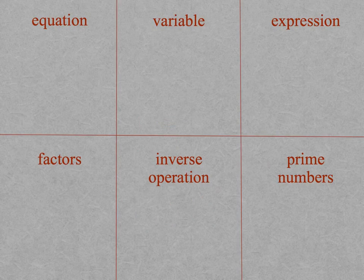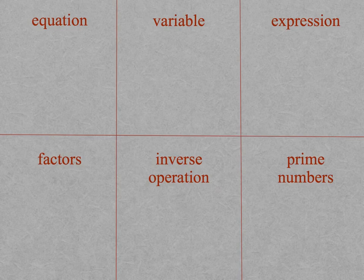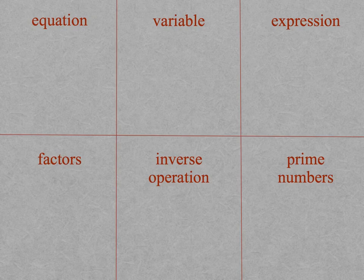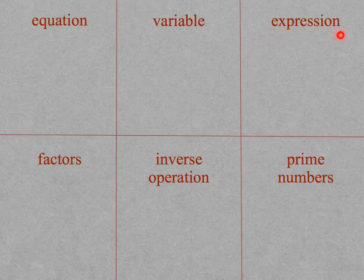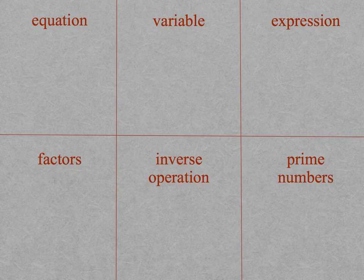On this final slide, get a piece of paper and fold it into sixths. You can have mom and dad help you with that if you'd like. And then label these six different sections. Go ahead and turn the paper landscape so you can get these all on and write equation, variable, expression, factors, inverse operation, prime numbers.